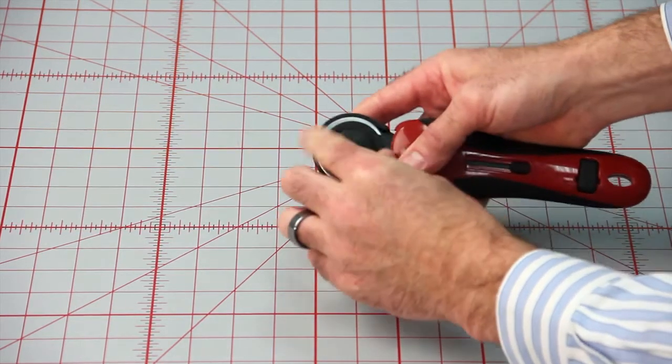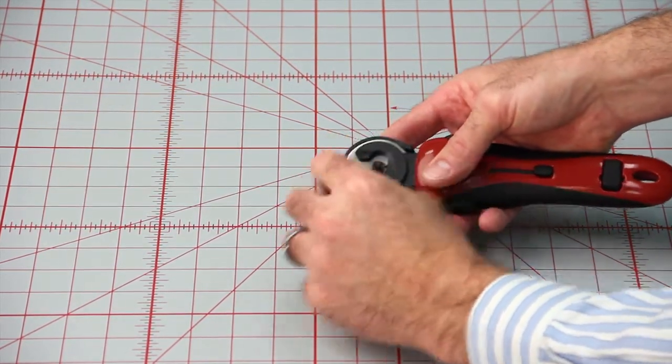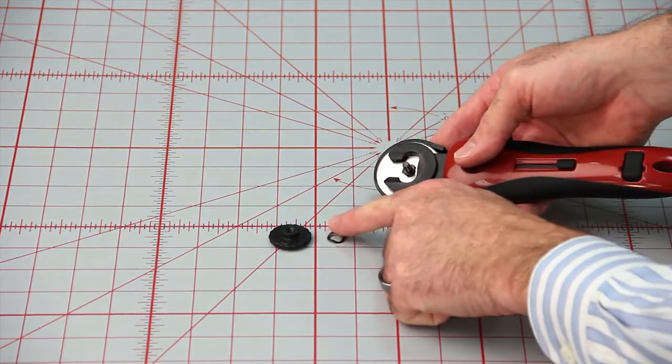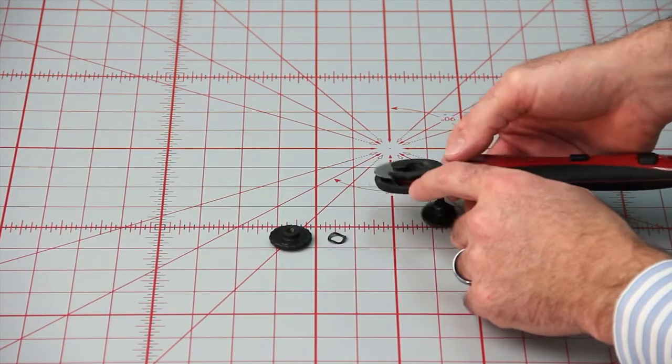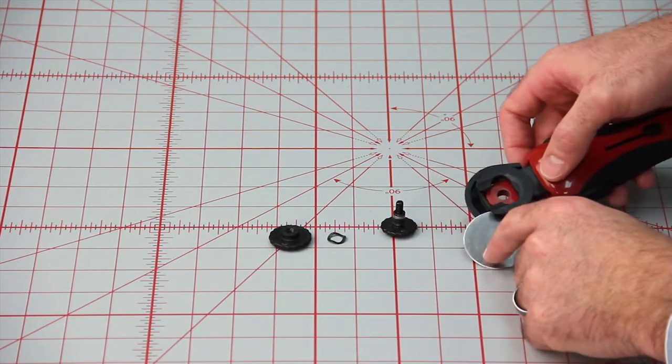We're going to simply loosen the nut here on the top. There's a spring on here as well. We're going to take the spring off, and now we're just going to go ahead and let the blade bolt fall out. You can see that blade just wants to come right out of the cutter.